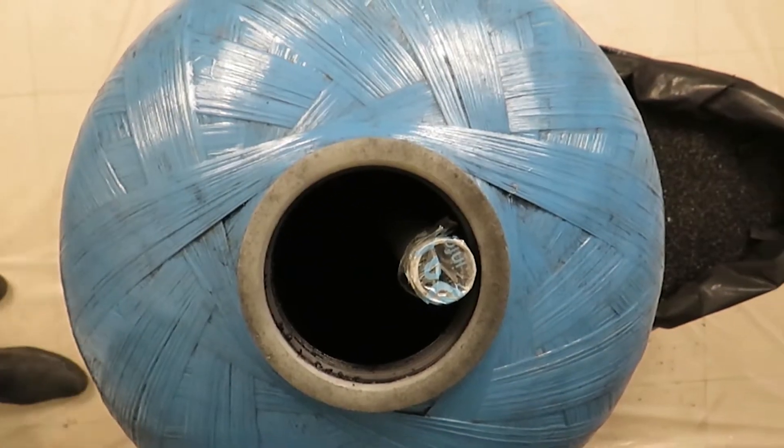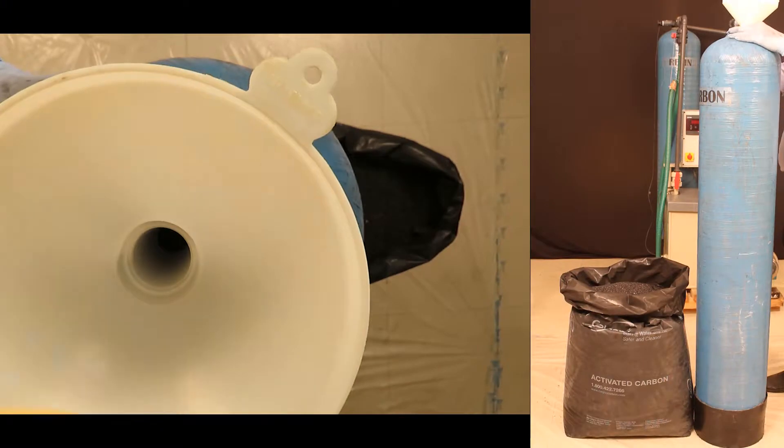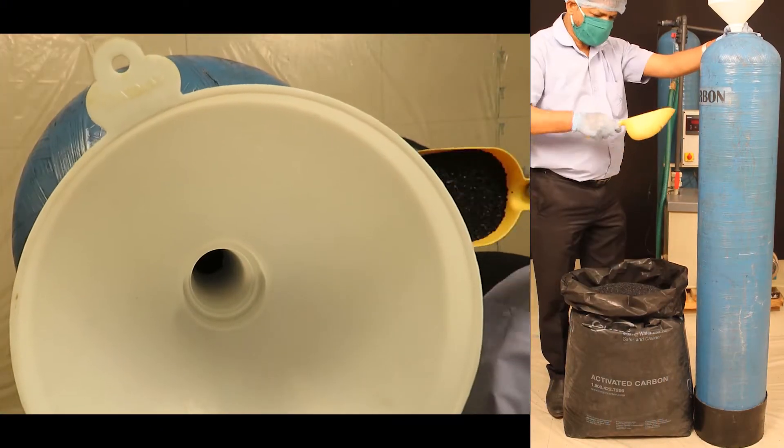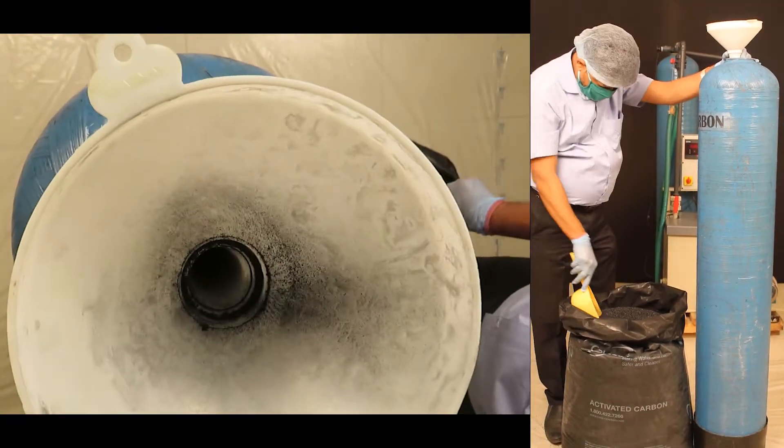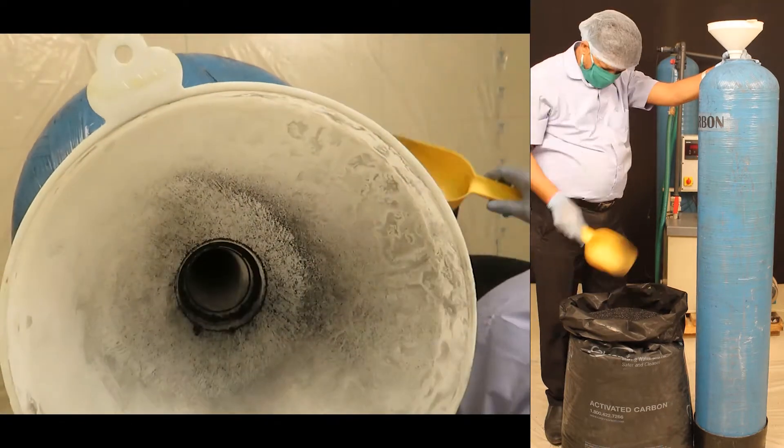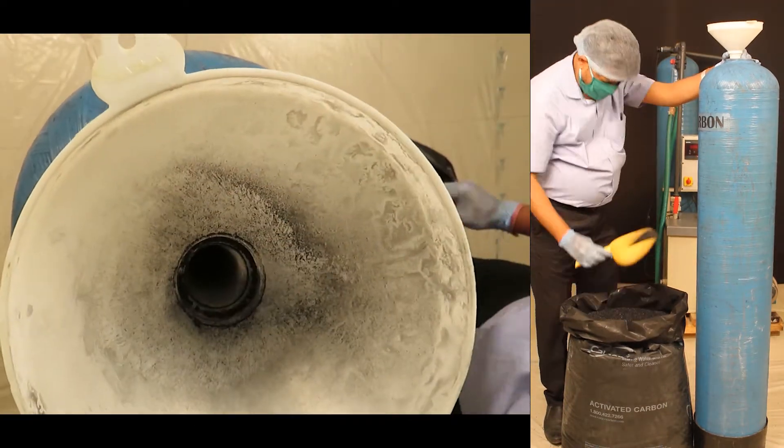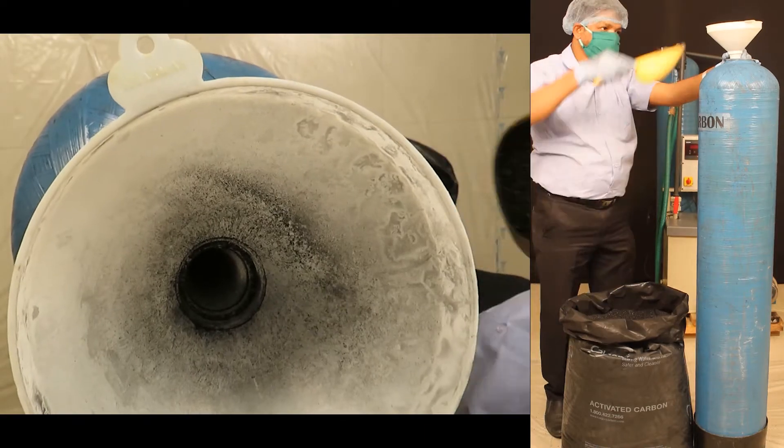Fill the new activated carbon provided by Do It Impex Private Limited into the carbon cylinder around the center pipe using a funnel or similar apparatus as shown in the video. Fill it approximately to 70 to 80 percent of the tank.